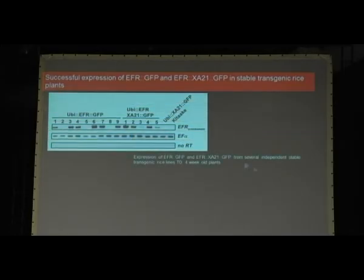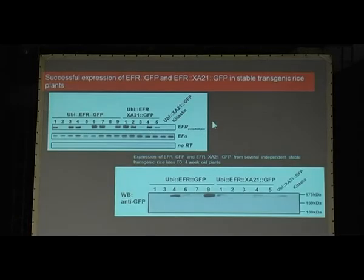We generated several plants which express EFR by RT-PCR. Then we looked for protein expression and generated several lines which showed relatively high expression levels of EFR and EFR-XA21. In addition, as you can see, this runs around 175 kilodaltons, which is higher than the predicted size based on the amino acid sequence, which suggests it's highly glycosylated, which is positive to see because glycosylation is very important for the function of these immune receptors.